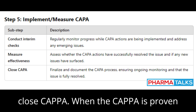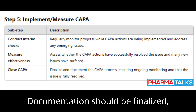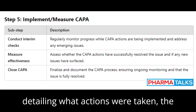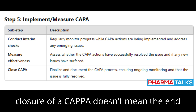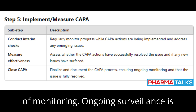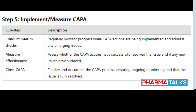Step 3: Close CAPA. When the CAPA is proven effective, it can be closed. Documentation should be finalized, detailing what actions were taken, the outcomes, and any lessons learned. The closure of a CAPA doesn't mean the end of monitoring — ongoing surveillance is necessary to ensure long-term success.